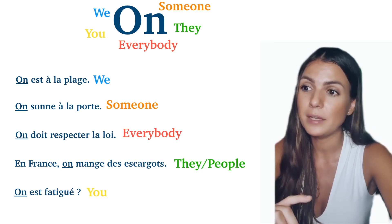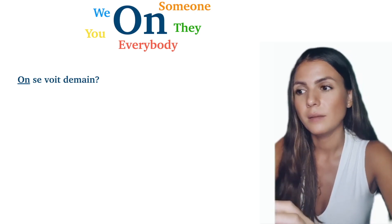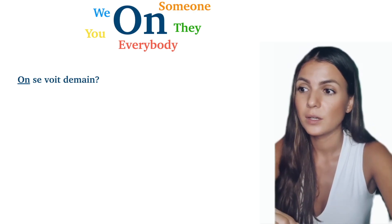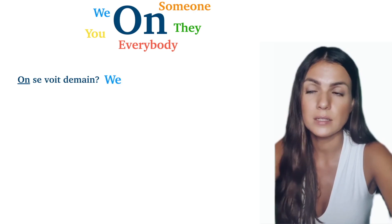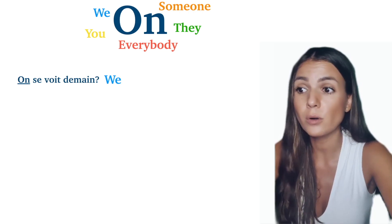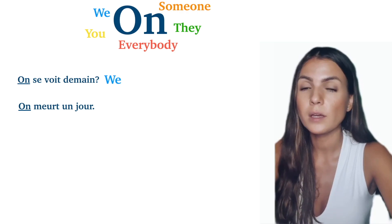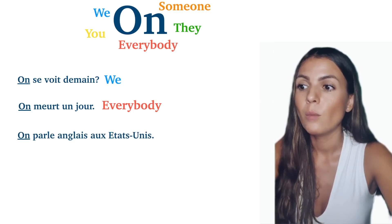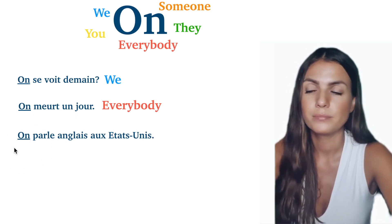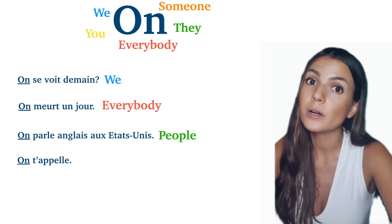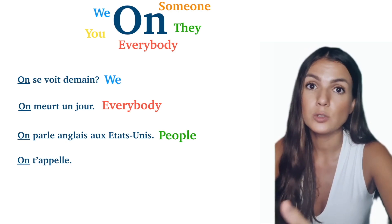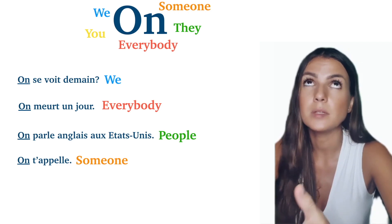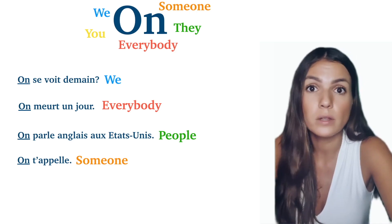Now your turn! I have a few sentences where you should guess the meaning. If I say 'on se voit demain?' — who do I mean? That's 'we' — do we see each other tomorrow? Next: 'on meurt un jour' — 'mourir' is to die — 'on' here means everybody or people. Next: 'on t'appelle' — 'appeler' is to call — your colleague says 'on t'appelle', meaning someone is calling you. We don't know who.